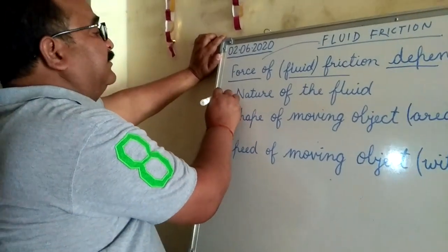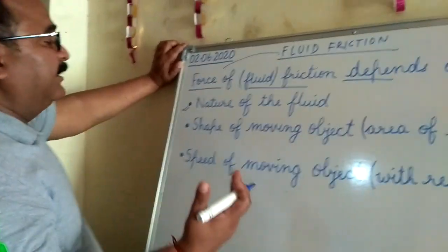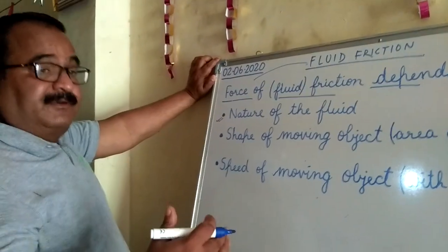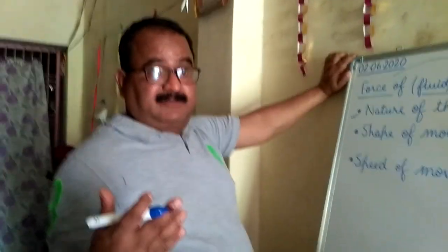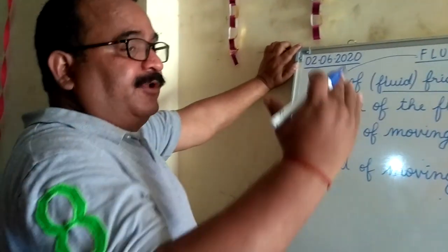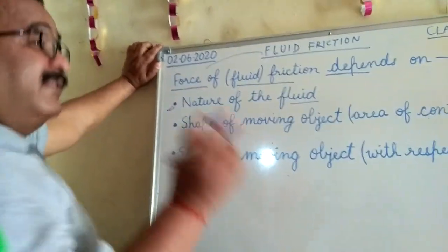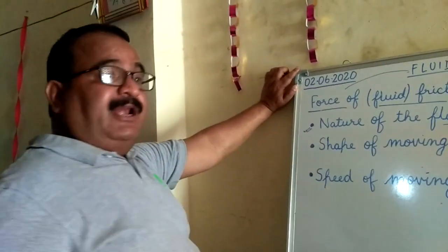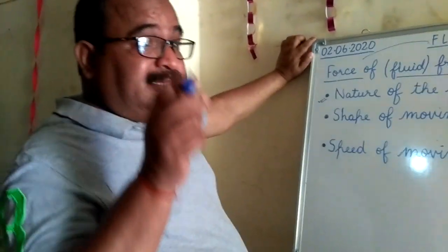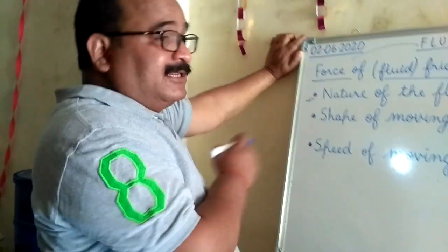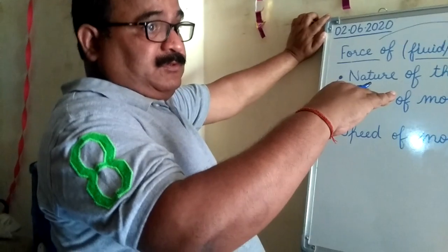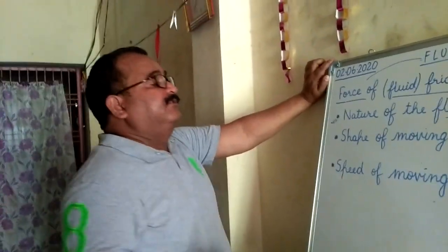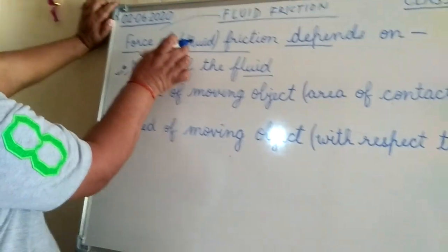The first factor is the nature of the fluid. When a body moves in a particular liquid that has more density, the friction exerted by that fluid is more. When a body moves in water versus a jelly-like substance, the jelly-like substance exerts more fluid friction than water because water has less density than the jelly-like substance. This is the first factor that changes the force of friction.